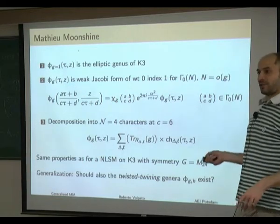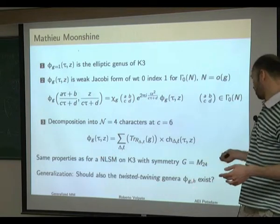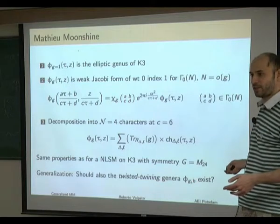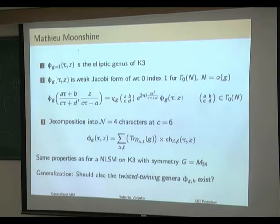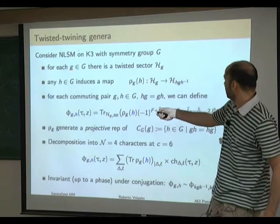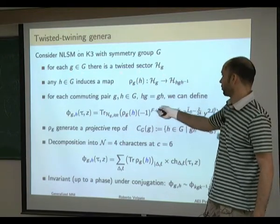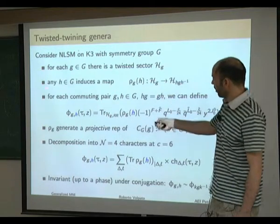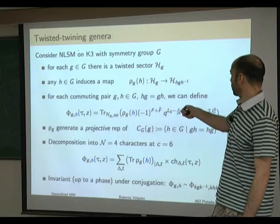As we saw in the introduction, one can try to generalize the Mathieu Moonshine story by introducing twisted twining genera phi_{G,H}, which depend on two elements of M24. Let's take the example of nonlinear sigma models on K3 with some symmetry group to check what properties we would like these twisted twining genera to have.